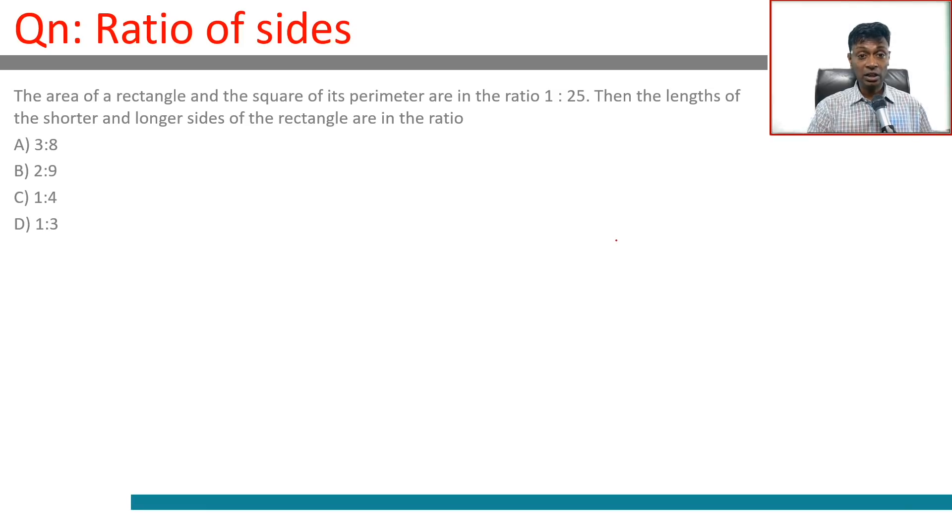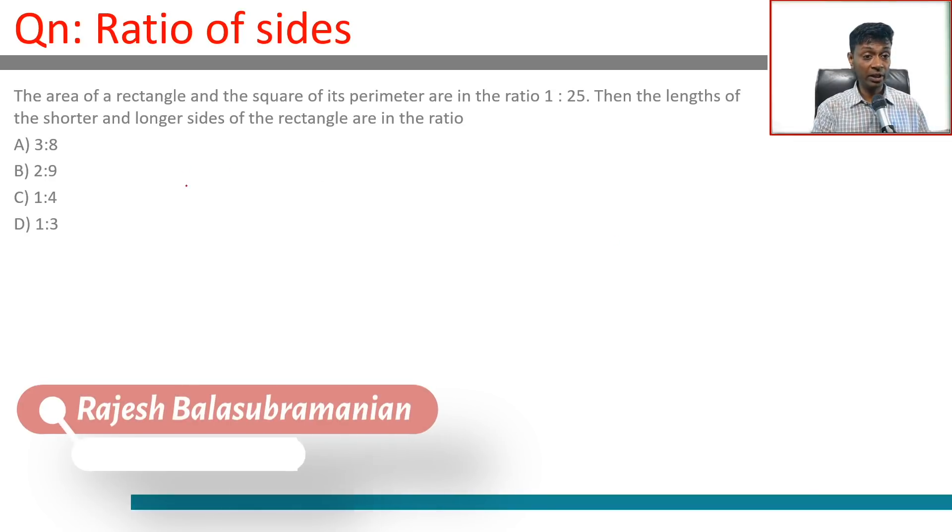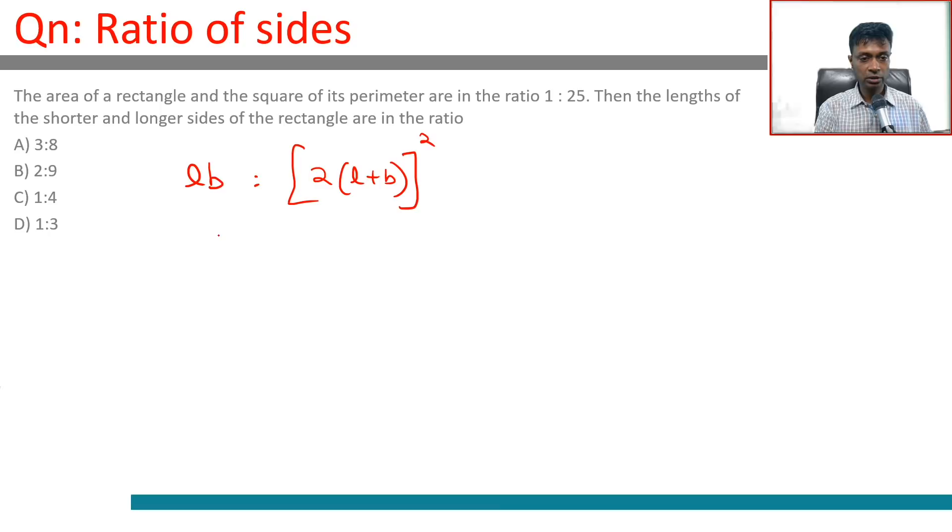The area of a rectangle and the square of its perimeter are in the ratio 1 is to 25. L into B is to 2 times L plus B whole square is 1 is to 25.